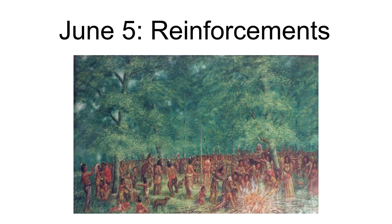Crawford became concerned about his family members — his son John, his son-in-law William Harrison, and his nephew also named William Crawford. With Dr. Knight, Crawford remained near the battlefield as his men passed, calling for his missing relatives and not finding them. Crawford became angry when he realized the militia, despite his orders, had left some of the wounded behind. After all the men had passed, Crawford and Knight, with two others, finally set off, but were unable to find the main body of men.